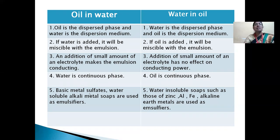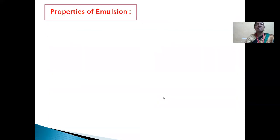Fifth difference: in oil-in-water, basic metal sulfates and water-soluble alkali metal soaps are used as emulsifiers. In water-in-oil, water-insoluble soaps such as zinc, aluminum, iron, and alkaline earth metal soaps are used as emulsifiers.